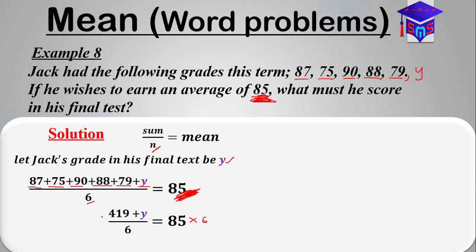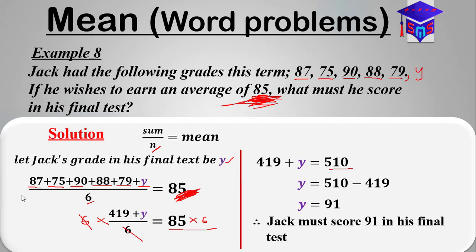You multiply this side by six and also you multiply this side by six, so that this six will cancel this six over here. Then we're having 419 plus y equals 85 times 6, which should be 510. When you solve for that, you'll be getting y equals 91. What it means is that for Jack to have an average score of 85, Jack must score 91 in the final test. Therefore, Jack must score 91 in his final test.